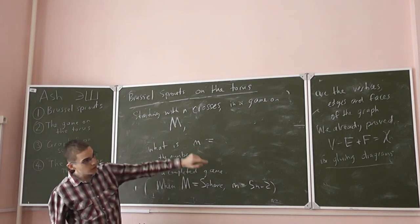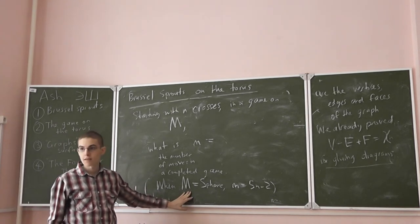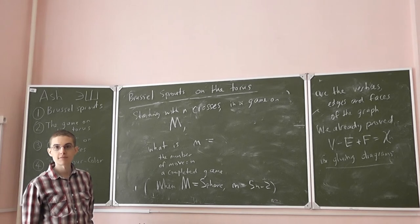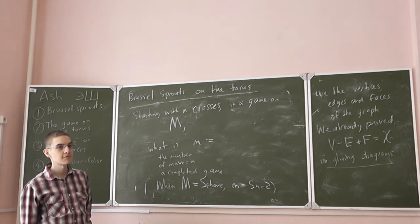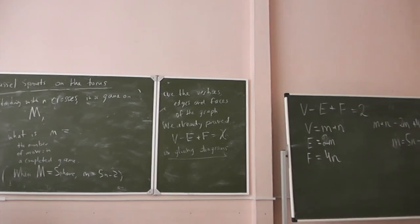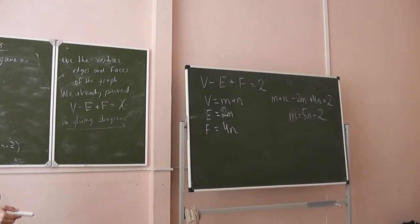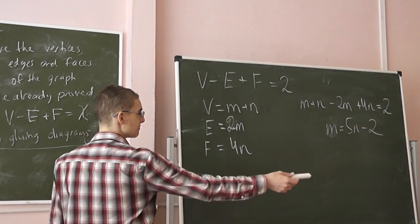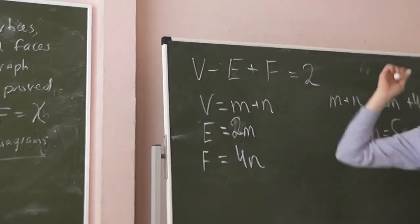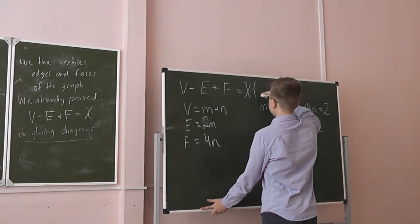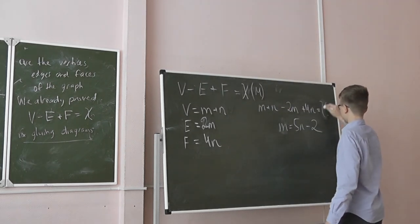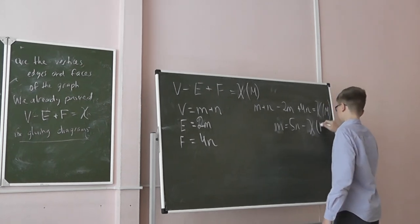Then we have 5n minus... It's 5n minus the Euler characteristic. Let's go to the form, show you what the form will be. Here, the Euler characteristic, there will be also Euler characteristic. The formula is 5n minus the Euler characteristic.